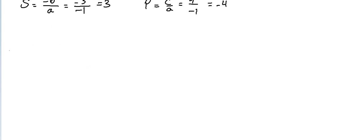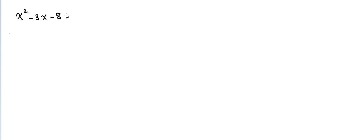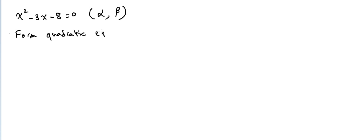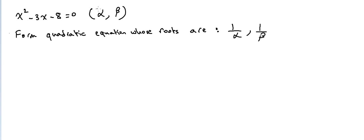Now in this example I'm going to do something else. We have the quadratic equation x²−3x−8=0, and the roots of this equation are alpha and beta. We have to form another quadratic equation whose roots are 1/alpha and 1/beta.